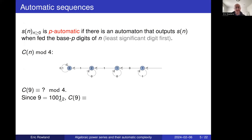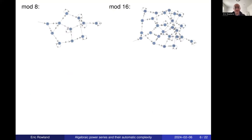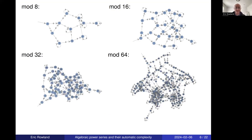For example, here is an automaton that computes the nth Catalan number modulo 4. To find the ninth Catalan number mod 4, write 9 in base two; reading least-significant digit first gives 1, 0, 0, 1. Following the automaton transitions, we finish in a state whose output is 2. So the ninth Catalan number mod 4 is 2. Similarly, we have automata for the Catalan numbers modulo 8, 16, 32, and 64.